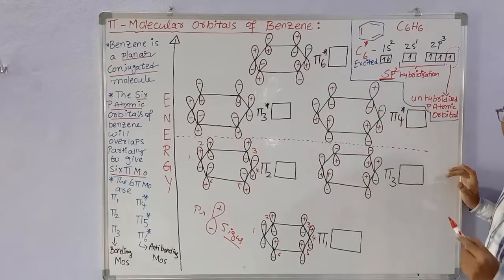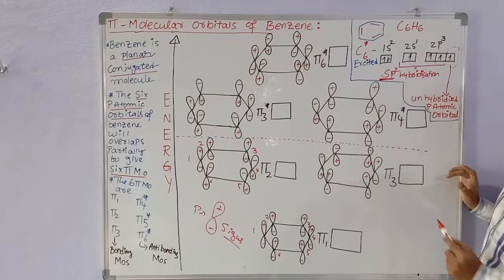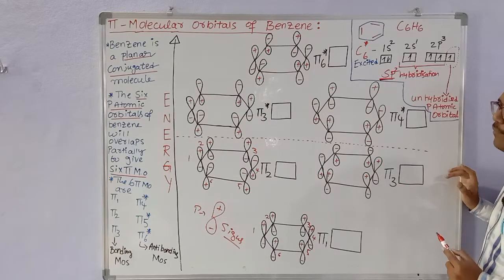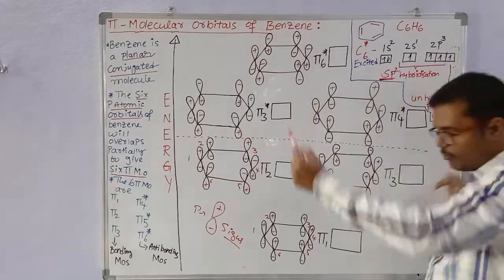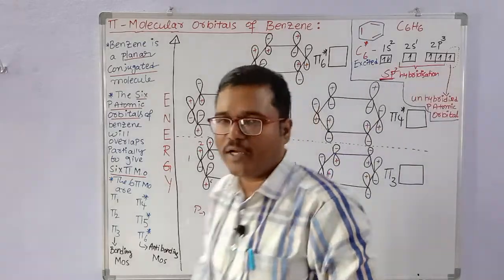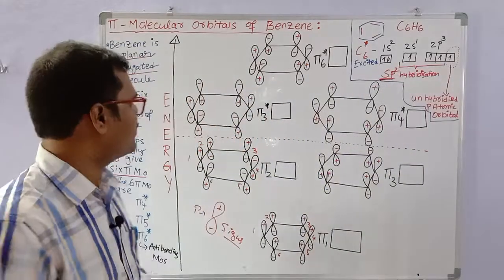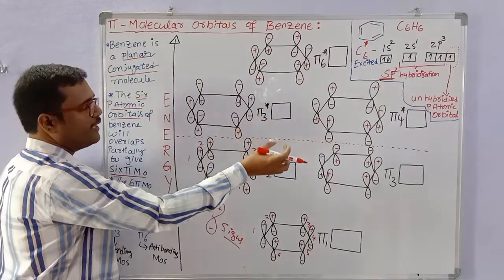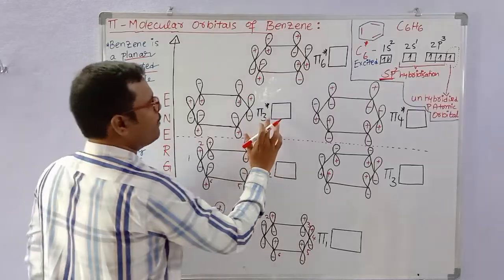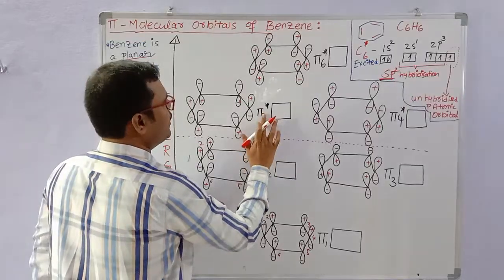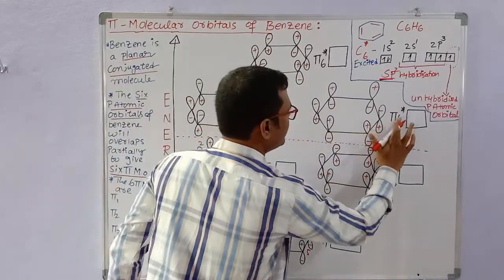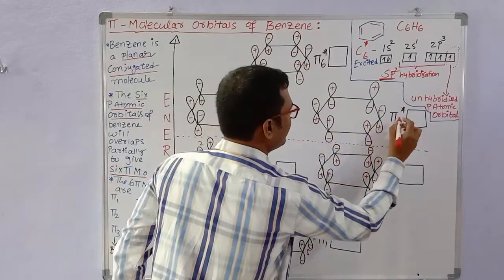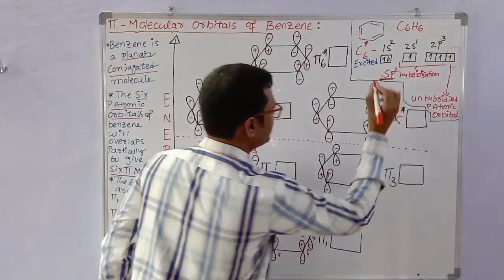This is the pi3 molecular orbital formation. Next come the two anti-bonding molecular orbitals, pi4* and pi5*, which are of higher energy.